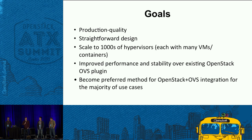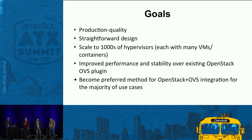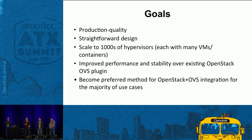Our goals are to make OVN production quality. OVS has a pretty good reputation for its core, and we want to continue that. The design is straightforward, it scales to thousands of hypervisors — we've already tested in the low thousands and expect to reach 10,000 hypervisors before long. We hope it will have improved performance and stability over the existing OVS plugin, and that it becomes the preferred method for most people who want to use OVS or networking in general.